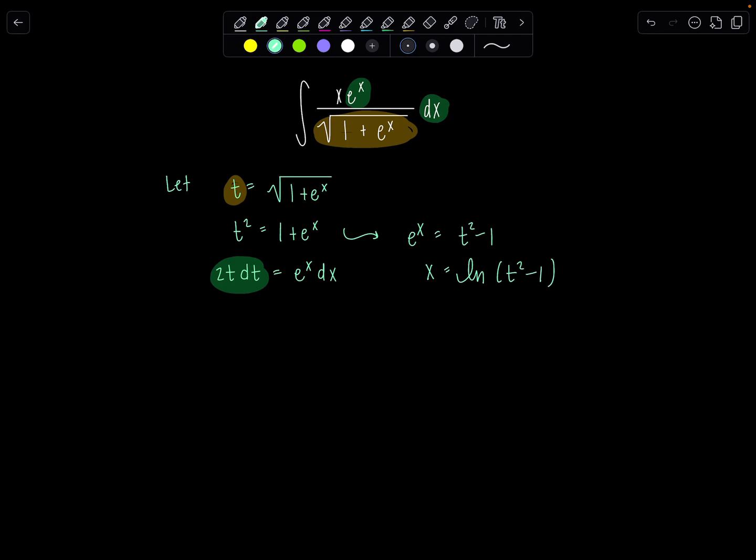So now we're going to have a natural log in our integral. Okay, so up top, that x is now natural log t squared minus 1. e to the x dx is 2t dt. And then in the denominator, square root of 1 plus e to the x is t. Oh, this looks lovely. Those t's cancel out immediately. And then now let me take the 2 outside the integral.